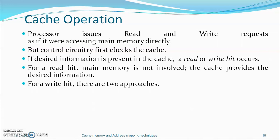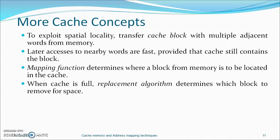Cache operations are defined in terms of read and write hits and read or write misses. The processor issues read or write requests as if accessing main memory directly. If the desired information is present in the cache, a hit occurs. For a read hit, main memory is not involved; the cache provides the desired information. For a write hit, there are two approaches which will be considered later. To exploit spatial locality, a cache block with multiple adjacent words is transferred from memory.